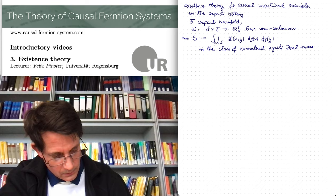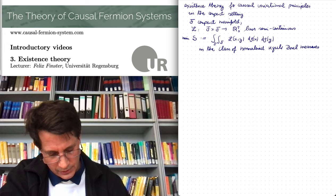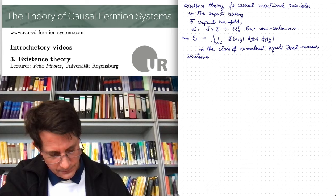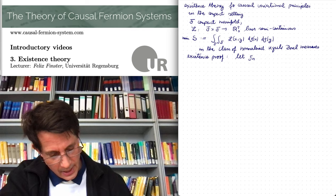But in this case it is fairly easy to construct minimizers using the direct method of the calculus of variations. Existence proof. So basically one considers a minimizing sequence. Let rho n be a minimizing sequence.